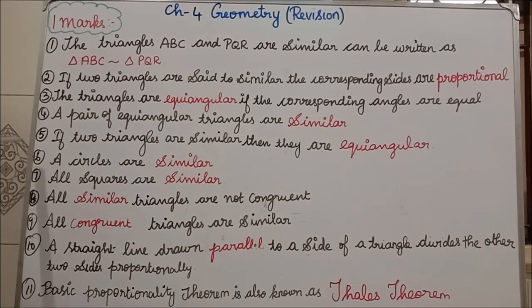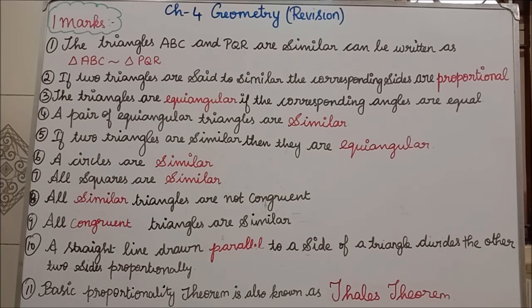Sixth one: circles are similar. All circles are similar. Seventh one: all squares are similar.